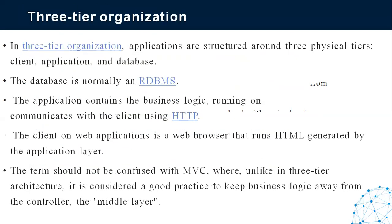In the three-tier organization, applications are structured around three physical tiers: client, application, and database. The database is normally an RDBMS. The application tier contains business logic running on a server and communicates with the client using HTTP. The client in a web application is a web browser that runs HTML generated by the application.